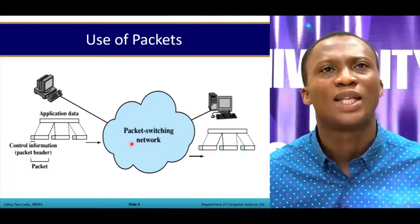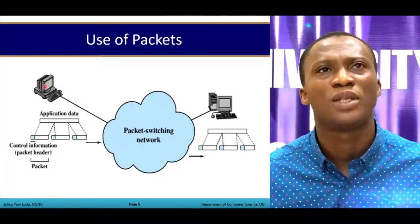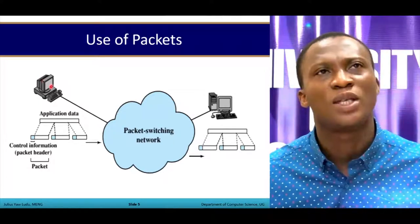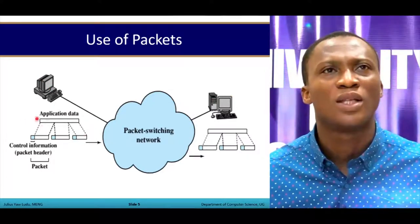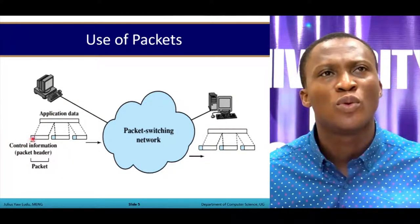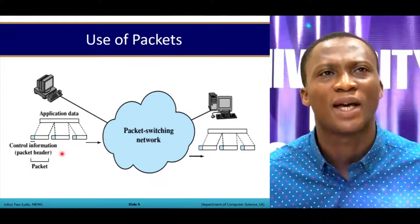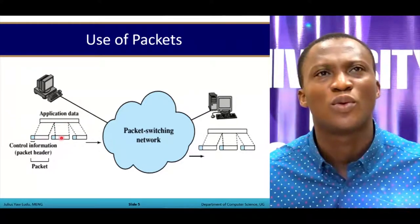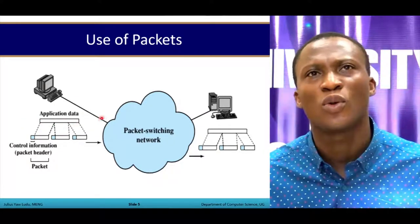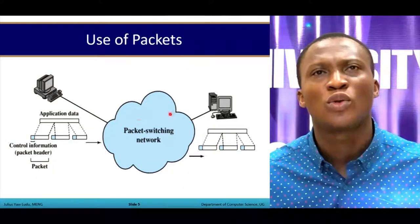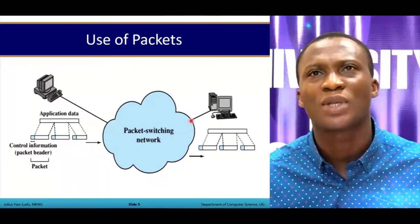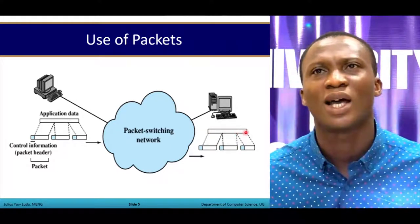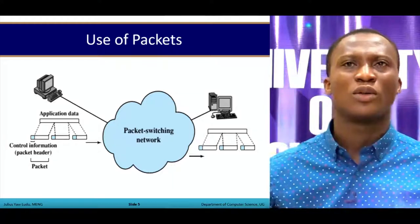In a typical packet switching network, we have dedicated PCs connected to it. If a packet is moving from PCA to PCB, the application data is shown, and the blue color indicates the control information or the packet header. This whole chunk is broken down into packets one, two, and three. The whole packet goes through the switching network, passes through some nodes, and comes out reassembled.